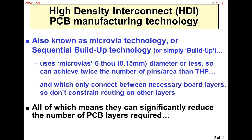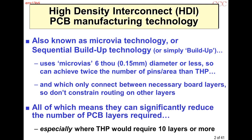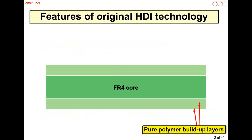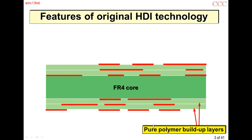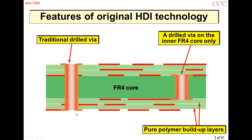This means microvias can significantly reduce the number of board layers you need, especially where through-hole plate would require ten or more layers. This is the original microviar technology: a core of FR4 with pure polymer build-up layers — a better material but more expensive. We can have a via drilled all the way through after lamination, and a via drilled in the FR4, possibly with many FR4 layers before the microvias are put on top.